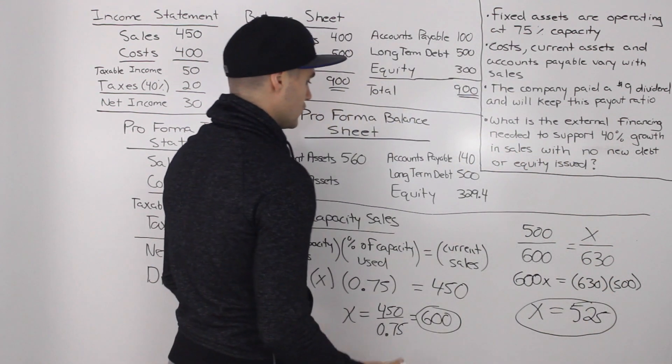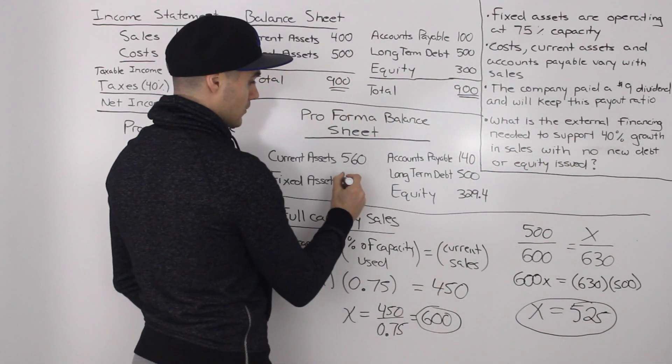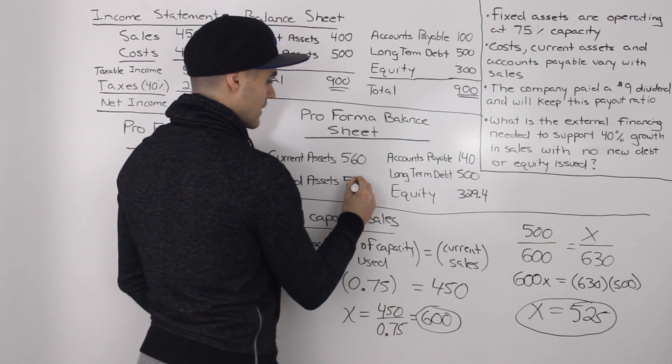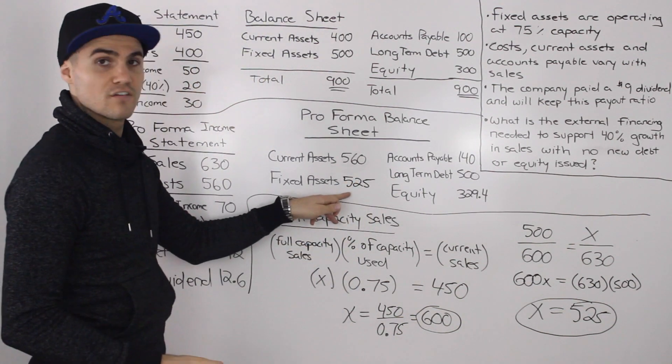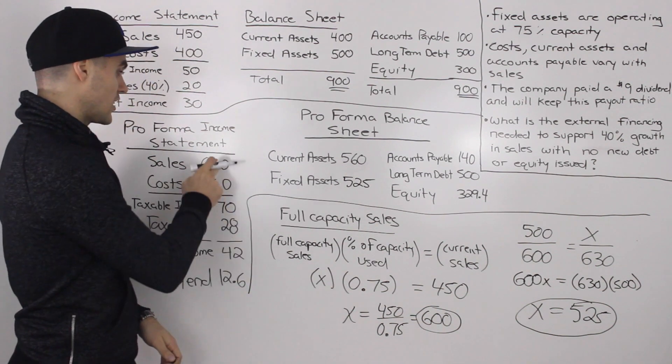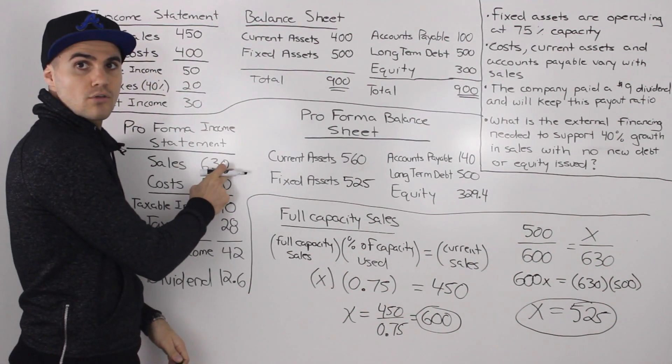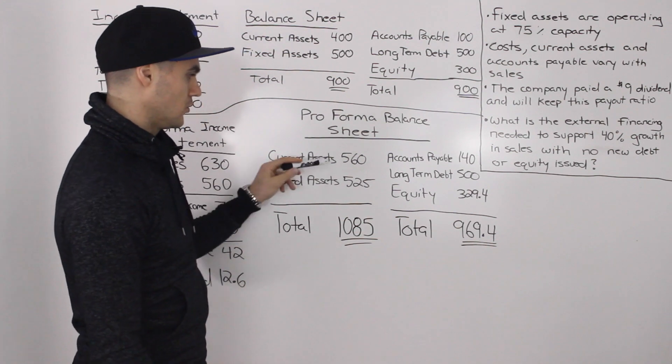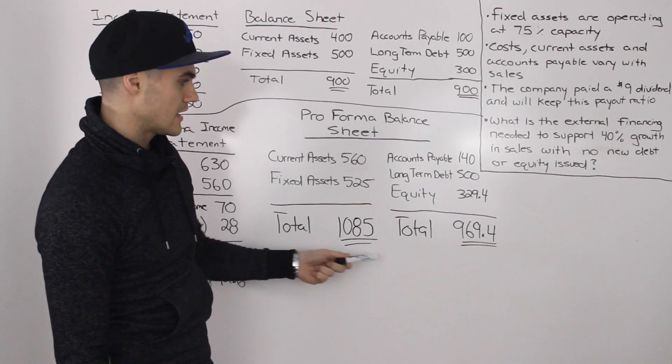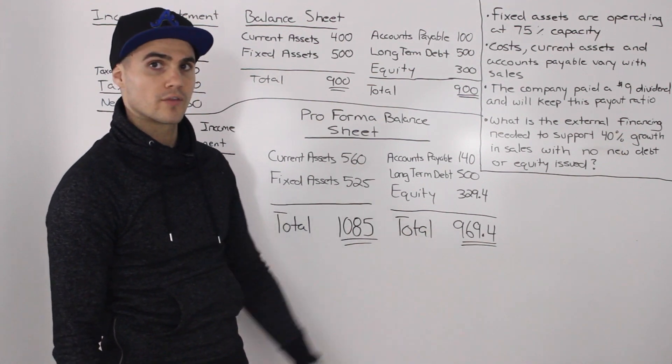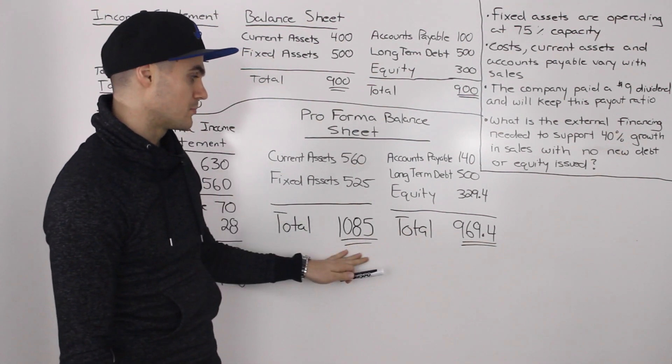So that is our new fixed assets amount. And that would go in the balance sheet here. So this would be 525. So we need $525 of fixed assets to generate $630 worth of sales. And now notice when we total both sides of the balance sheet, we get $1085 on the left side and then 969.4 on the right side, and they aren't balancing.